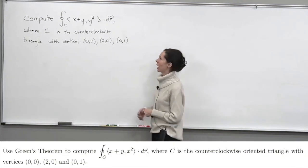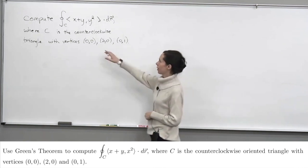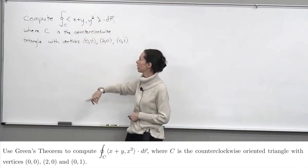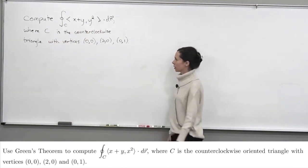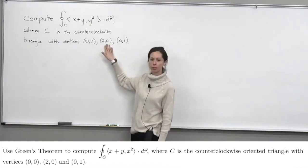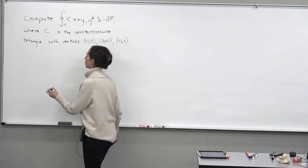So the first example that we're going to look at is we're going to compute this circulation integral of the vector field whose coordinates are x plus y and y squared around this curve C, where C is the counterclockwise triangle whose vertices are at the origin, the point (2,0), and the point (0,1). So let's first sketch a picture of C.